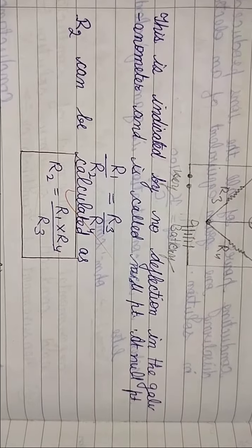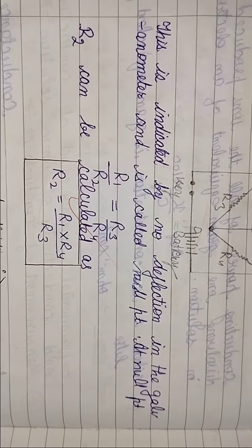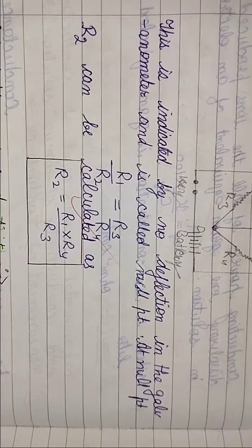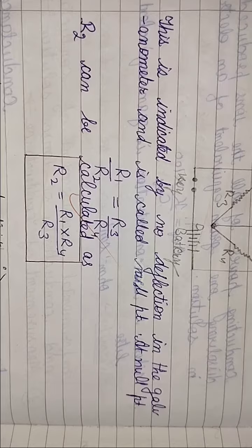is just like this: R1 upon R2 is equal to R3 upon R4. And we know the unknown resistance is R2, and we have to find R2. So R2 can be calculated as R2 equals R1